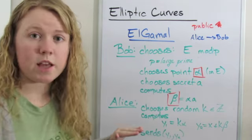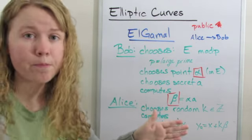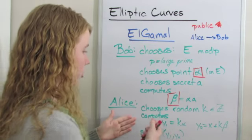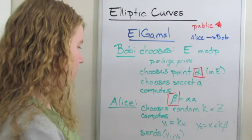Now Alice, when Alice wants to send Bob a message after Bob has set up this system, what she does is she chooses a random k, that's an integer, and she computes these two things.